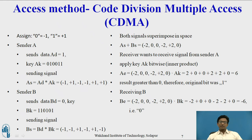Now tuning into sender B: B's code BK is applied by computing C times BK. That gives: 2, 0, 0, minus 2, minus 2, 0. The resulting sum is minus 6. Since the result is negative, binary 0 is detected — the same original data sent by sender B. In this way, code division multiple access is used to identify data from sender A and sender B that were superimposed in the space.